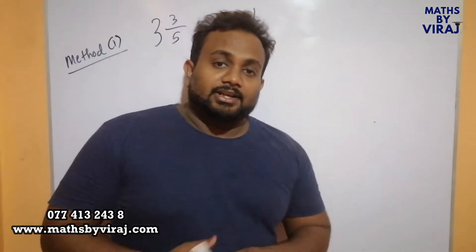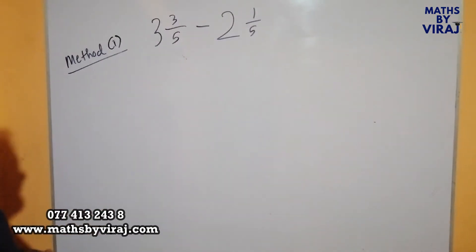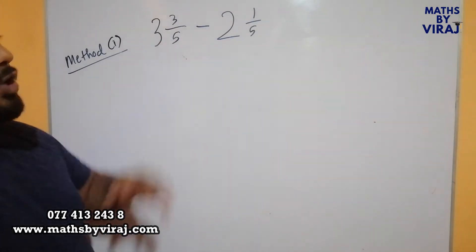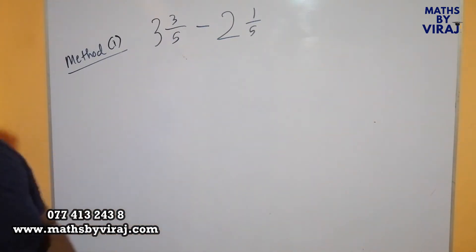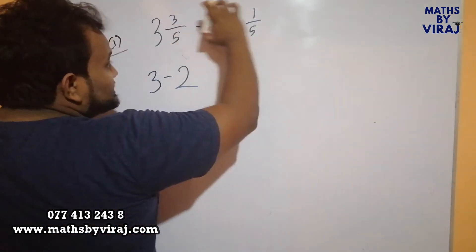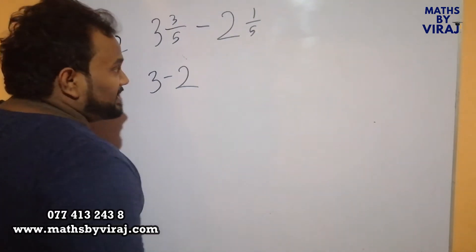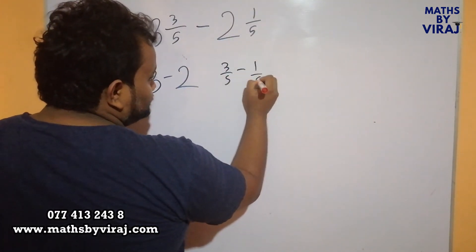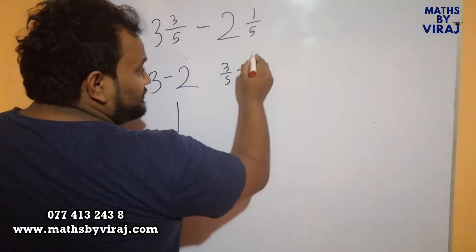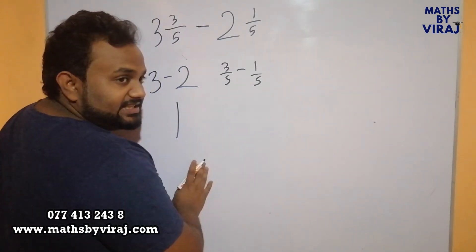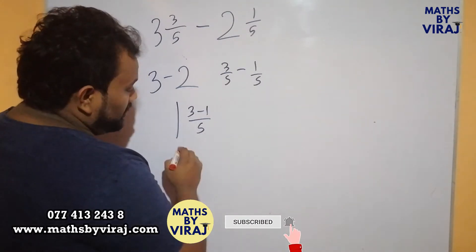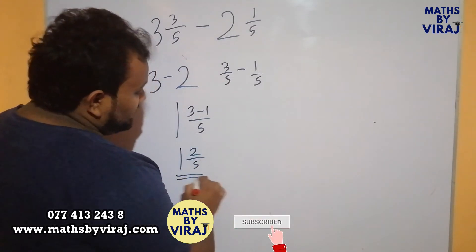Right children. Now let's look at 2 fractions where they are mixed fractions and they are subtracted from one another. Under method 1, you see that there are 2 whole numbers; we can subtract one whole number from the other. You see that 3 minus 2, and now these 2 proper fractions are then considered. 3 minus 2 is 1, then 3 over 5 minus 1 over 5. Since the denominators are the same, we can simply subtract the numerators. Therefore the answer is 1 and 2 over 5.